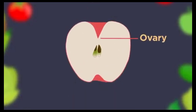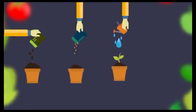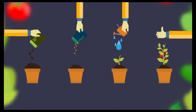The ovary enlarges and becomes a fruit surrounding the internal seed. The fruit and seeds are dispersed in many ways, some even by humans, where they will again grow into a new plant under the correct conditions, completing the long cycle of sexual reproduction in plants.